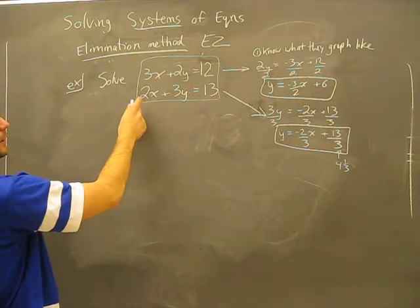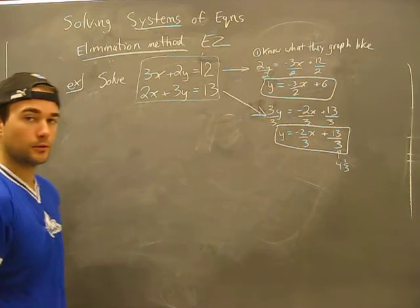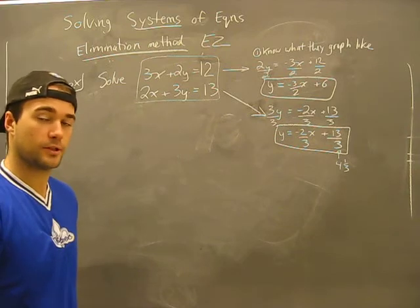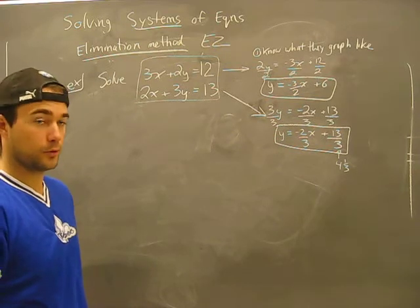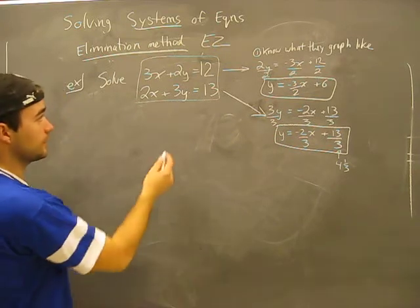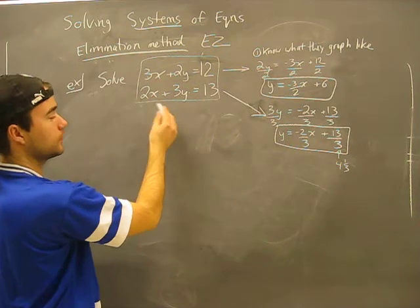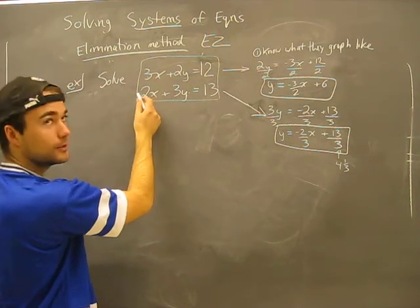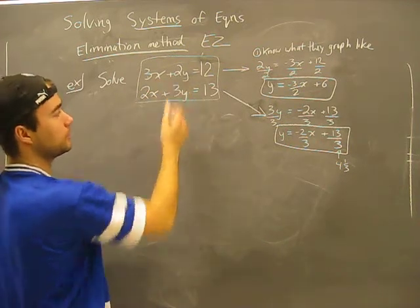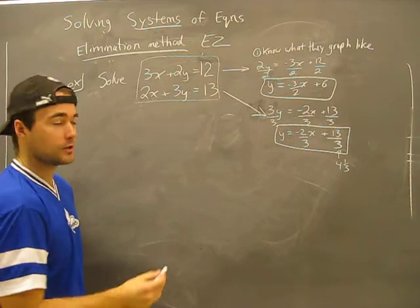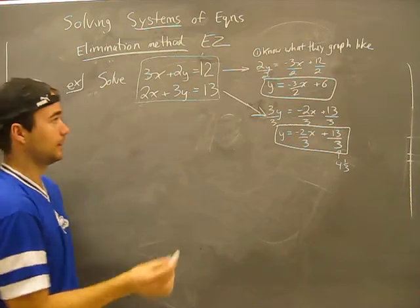First of all, we're going to want to solve this through elimination. A two and a three — a three and a two are not the same. So as is, we can't eliminate things.